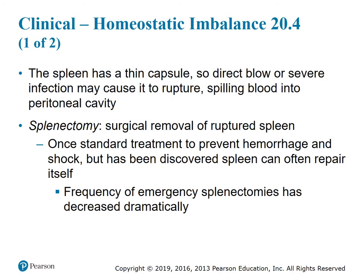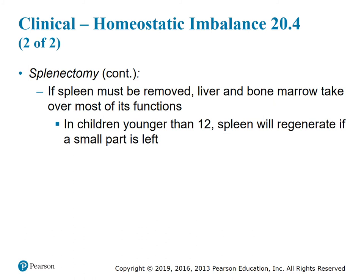Clinical homeostatic imbalance 20.4: The spleen has a thin capsule, so a direct blow or severe infection may cause it to rupture, spilling blood into the peritoneal cavity. Splenectomy is the surgical removal of a ruptured spleen. Once it was the standard treatment to prevent hemorrhage and shock, but it has been discovered that the spleen can often repair itself, so the frequency of emergency splenectomies has decreased dramatically. If the spleen must be removed, the liver and bone marrow take over most of its functions. In younger children under 12, the spleen will regenerate if a small part is left.